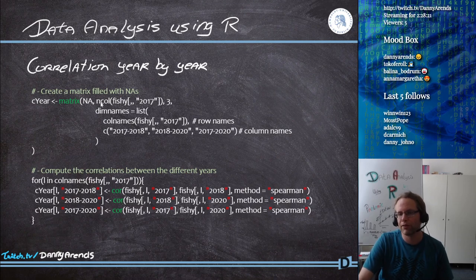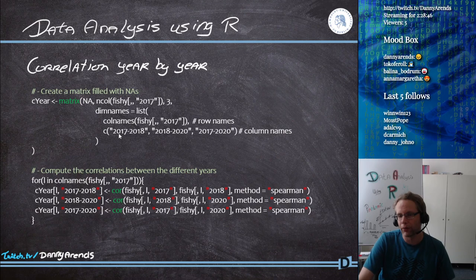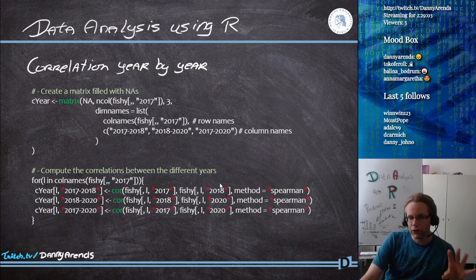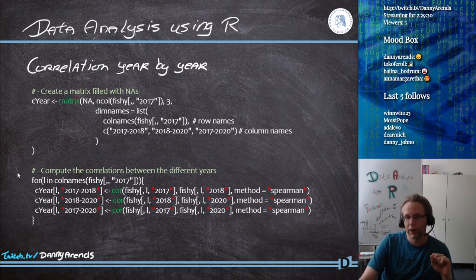The matrix uses lakes as rows and three different year-pair comparisons as columns: 2017 vs 2018, 2018 vs 2020, and 2017 vs 2020. I add row names and column names, then loop over the lake names to compute correlations between each year pair and fill the matrix.